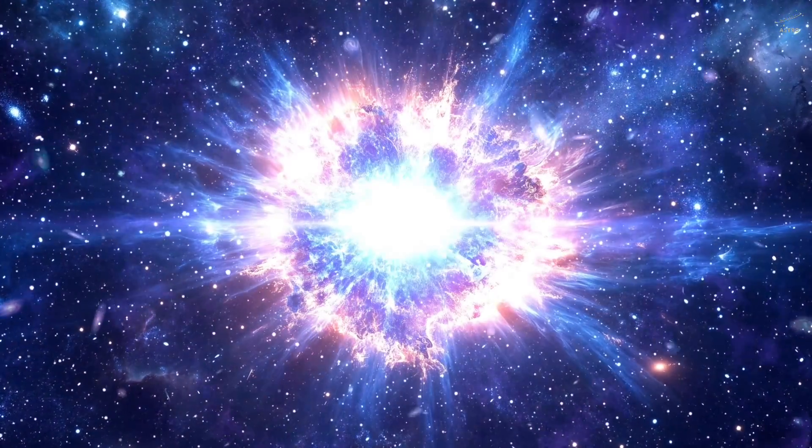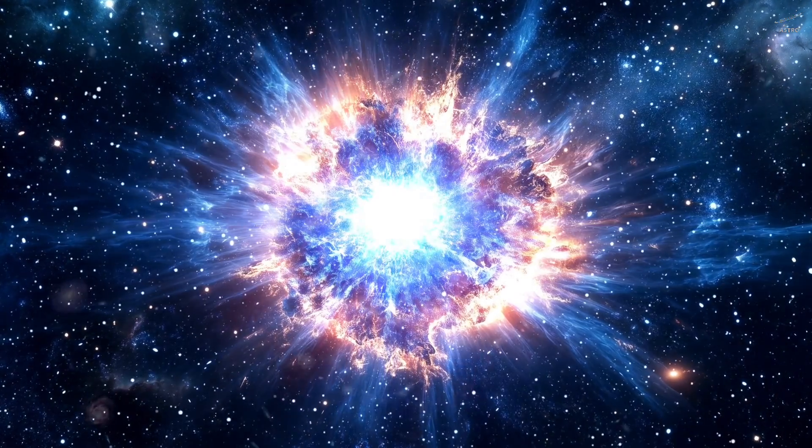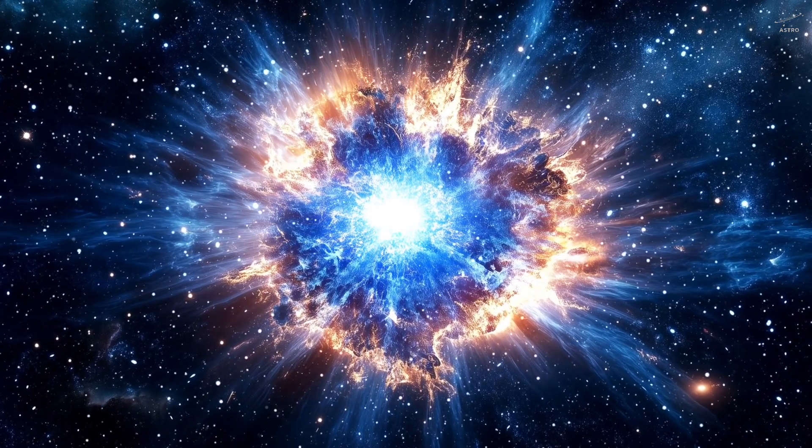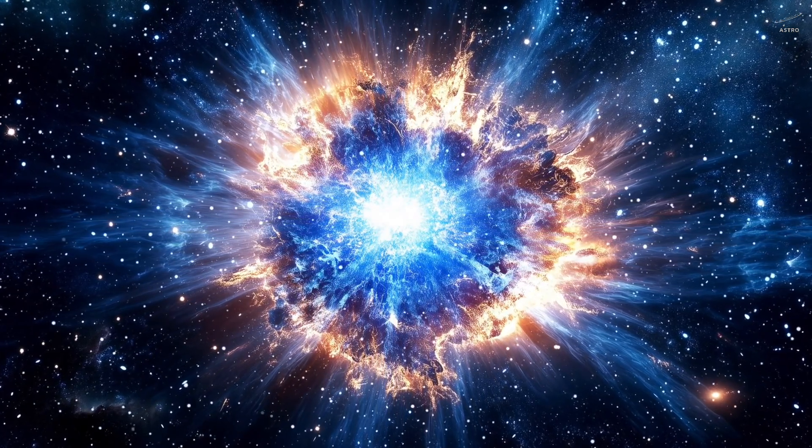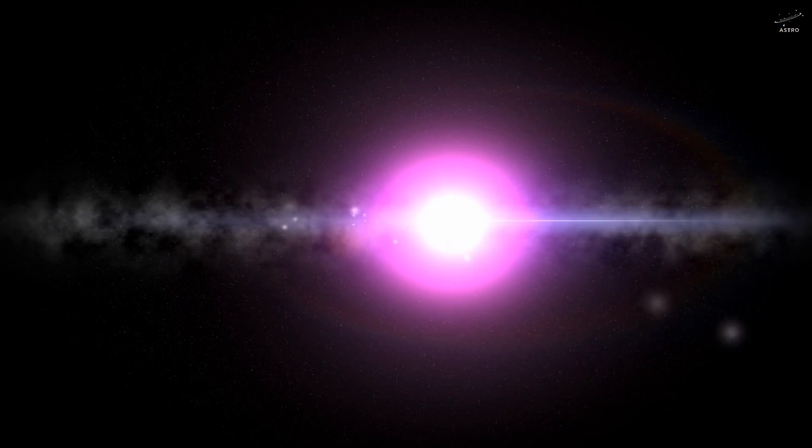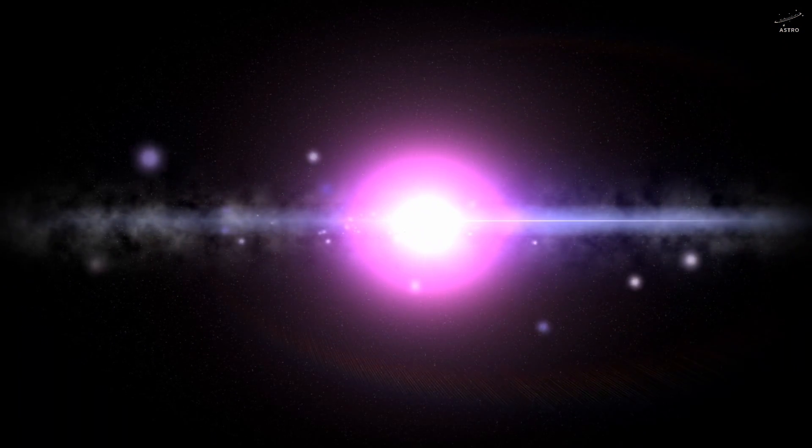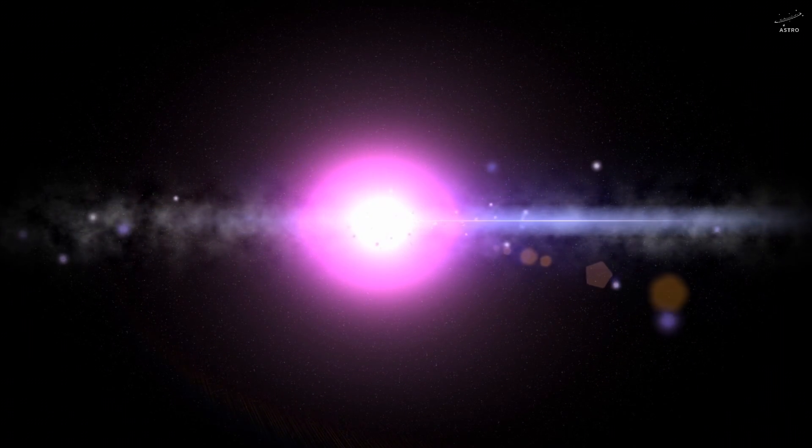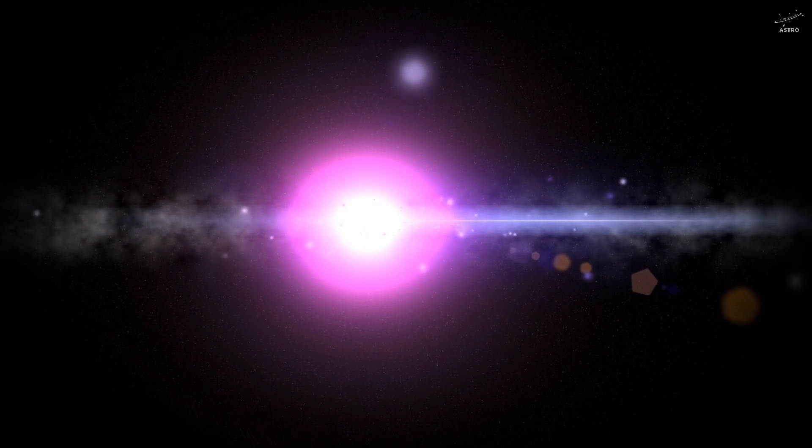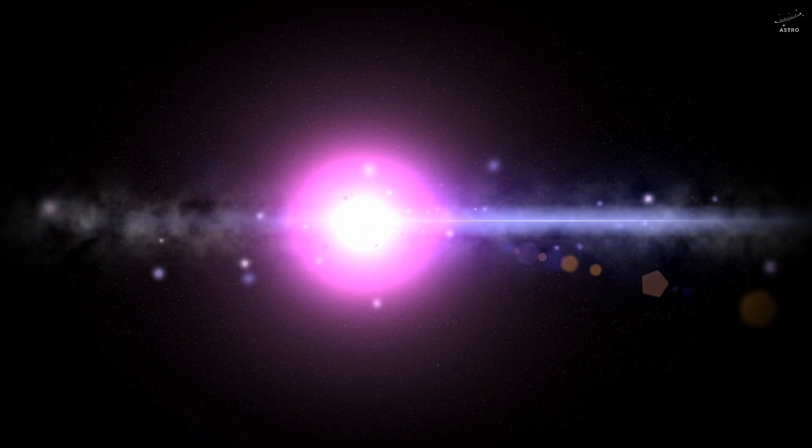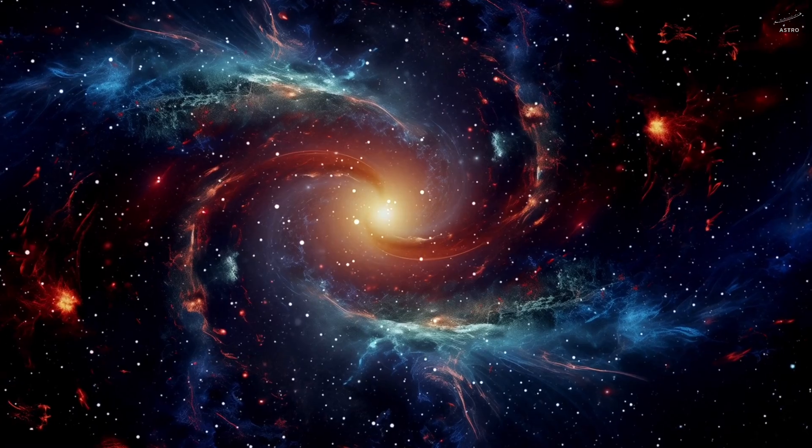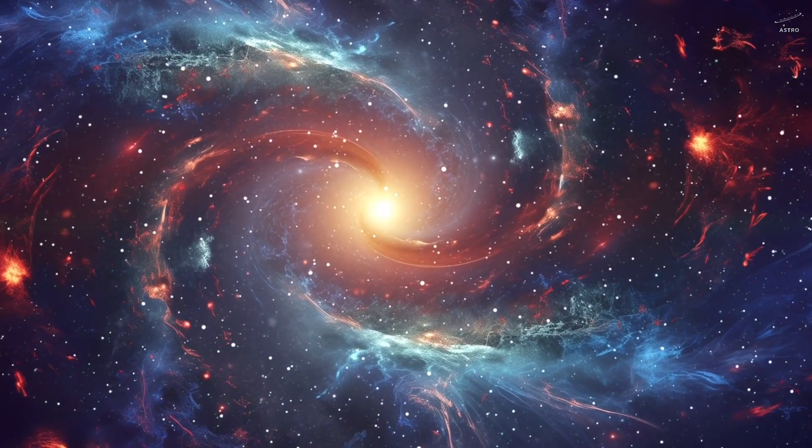Supernovae and neutron stars. Another strong contender for the source of these particles is supernovae. When a massive star reaches the end of its life, it erupts in a violent explosion, sending powerful shockwaves across space. These shockwaves could accelerate cosmic rays to extreme speeds. Then there are neutron stars, the incredibly dense remnants left behind after a supernova. Among them, pulsars—rapidly spinning neutron stars—generate magnetic fields millions of times stronger than Earth's. These fields could act as natural particle accelerators, launching cosmic rays deep into space.